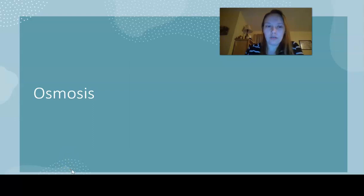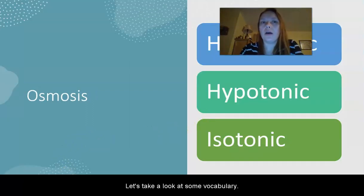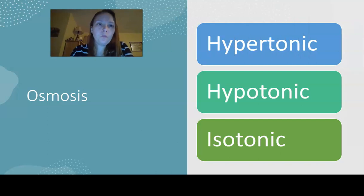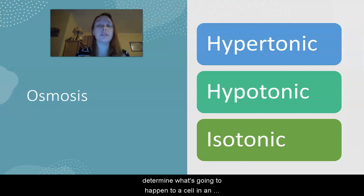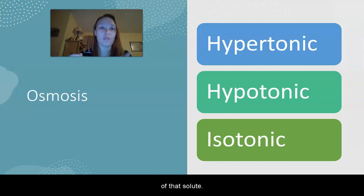So first, let's take a look at some vocabulary. When we are talking about osmosis and we're trying to determine what's going to happen to a cell in an environment, we have to talk about what solution that particular cell is in. Remember when we talked about solutions, it is water with something dissolved in it. The solute is the stuff that's dissolved in the water. So when we talk about the solution that a cell is in, we can use three different words to describe the concentration of that solute.